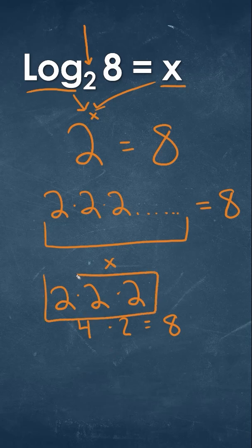Meaning that we multiplied it 3 times. So that would tell us that 2 raised to the third power would give us an answer of 8. So x is equal to 3.